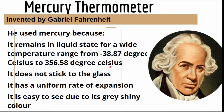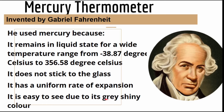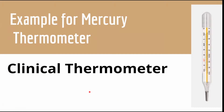Mercury does not stick to the glass, it has a uniform rate of expansion, and it is easy to see due to its gray shining color. An example of a mercury thermometer is the clinical thermometer, which we all know about.